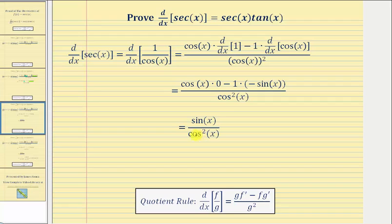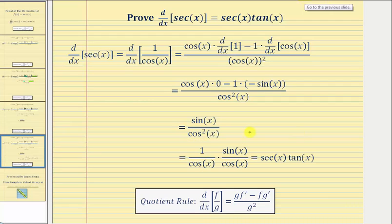Now we'll write this fraction as a product of two fractions: one over cosine x times sine x over cosine x. Notice how this product is still sine x divided by cosine squared x, but one over cosine x is equal to secant x, and sine x divided by cosine x is equal to tangent x.